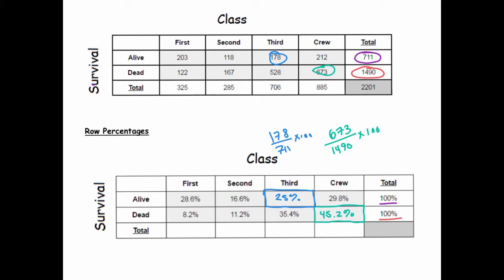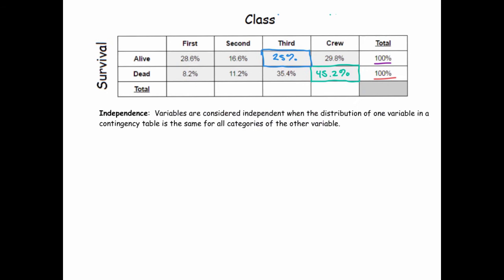When we look at each row separately, we see the distribution of class under the condition of surviving or not. We think of dividing the entire ship into two groups — those who survived and those who died — and look at each group separately to see how the distribution of class looks within each group. The reason we do this is because we're interested in whether your chance of survival depended on your class, and that brings up the notion of independence.